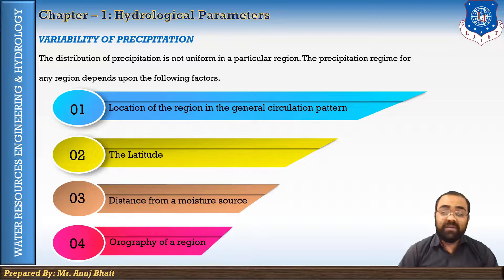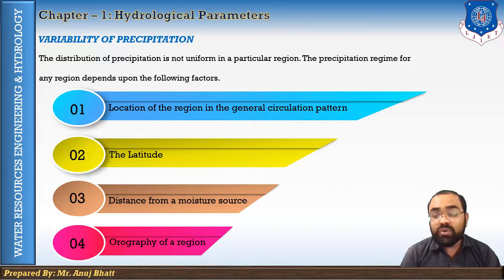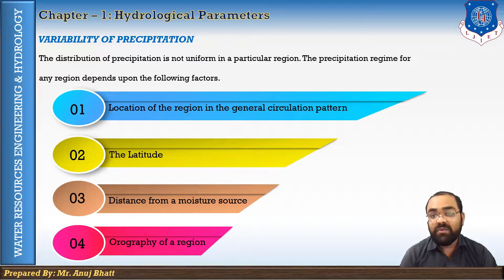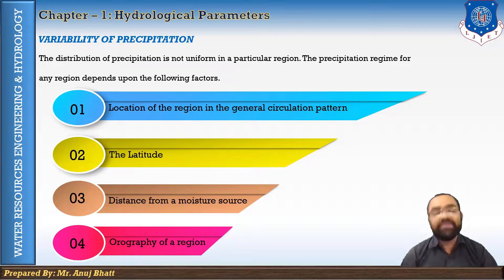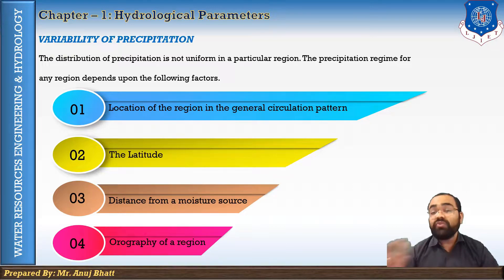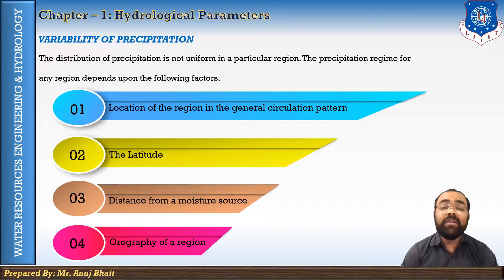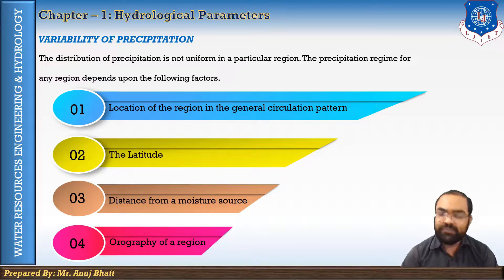The third factor is the distance from a moisture source. Near the coastlines, precipitation tends to be heavier. With increasing distance from the coastline, the moisture in the wind decreases, and thus precipitation also decreases. The decrease in precipitation northward from the Gulf Coast is the most marked example of this effect with distance from moisture sources.